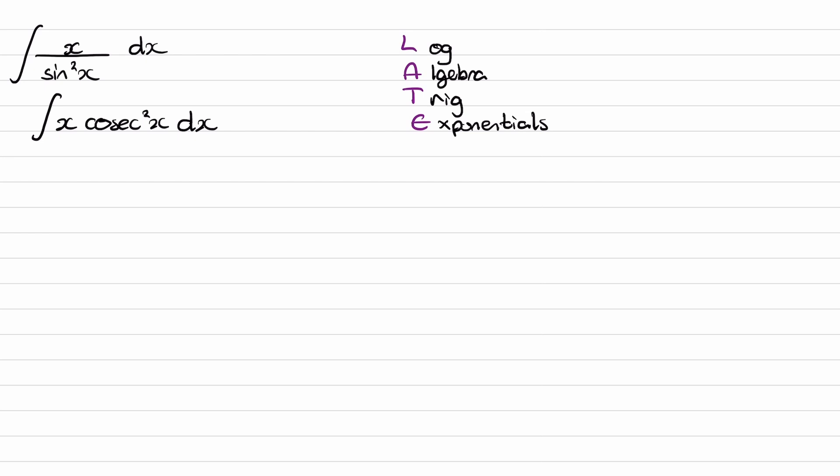So what we have here, we have algebra and trig. Algebra comes before trig in the word LATE, so we would set our x to be u, and our cot squared x to be v dash.